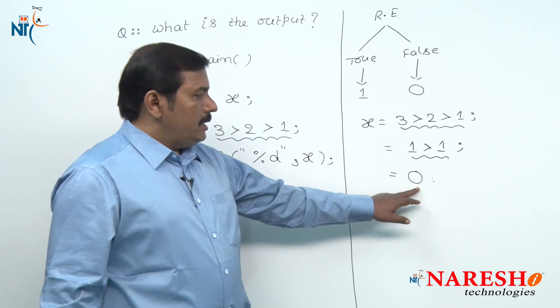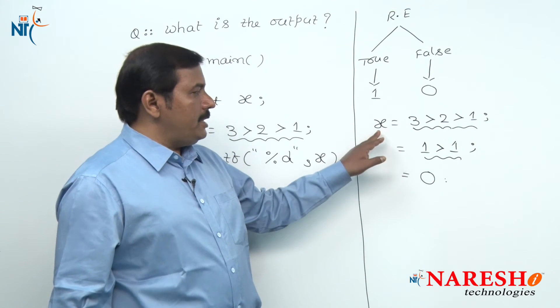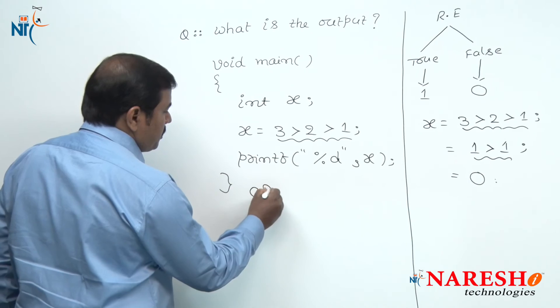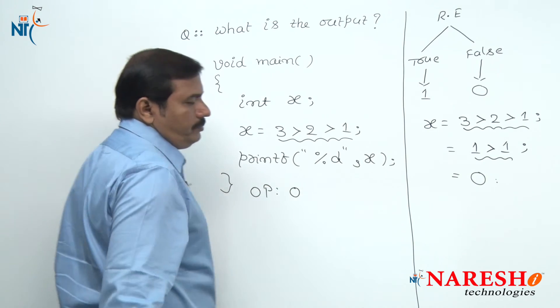Finally, the value 0 is assigned to the variable x. Hence, the final output of this code is 0.